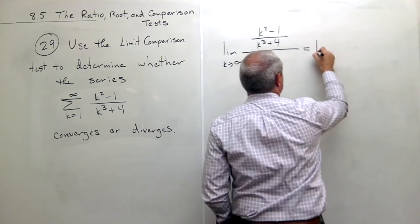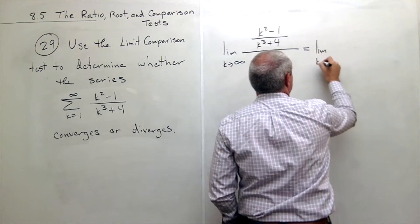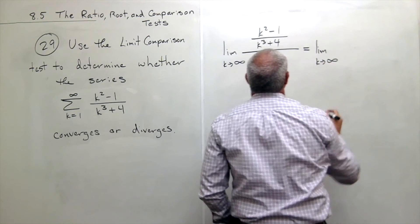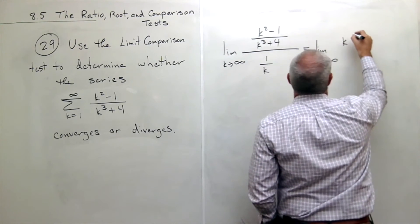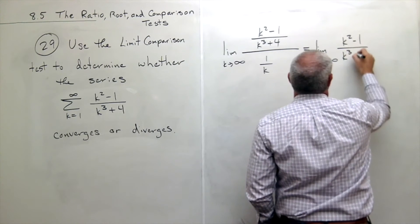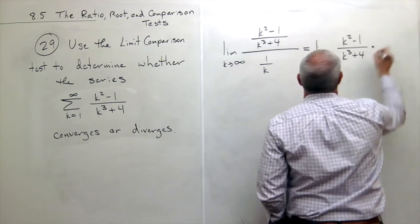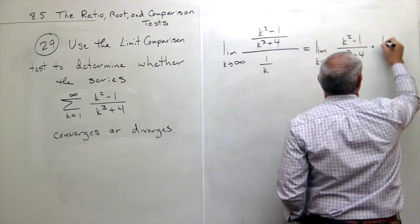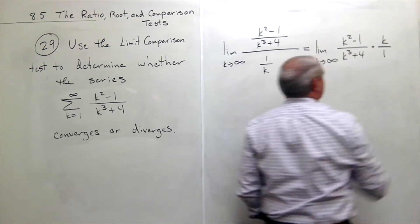let's flip and multiply. So I get the limit as k goes to infinity of k squared minus 1 over k cubed plus 4 times, when I flip and multiply, the k is on top and a 1 is on the bottom.